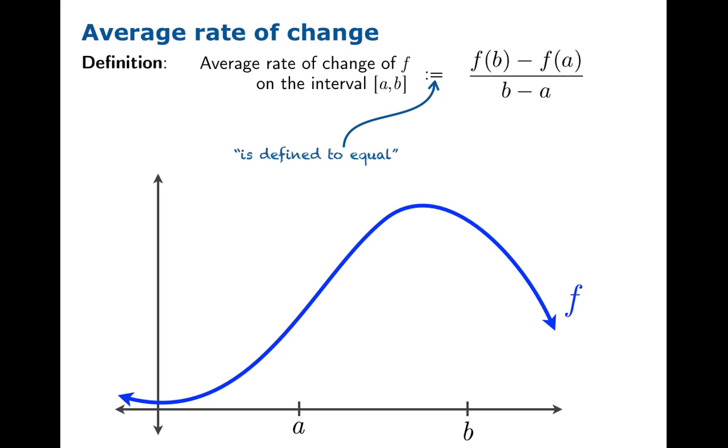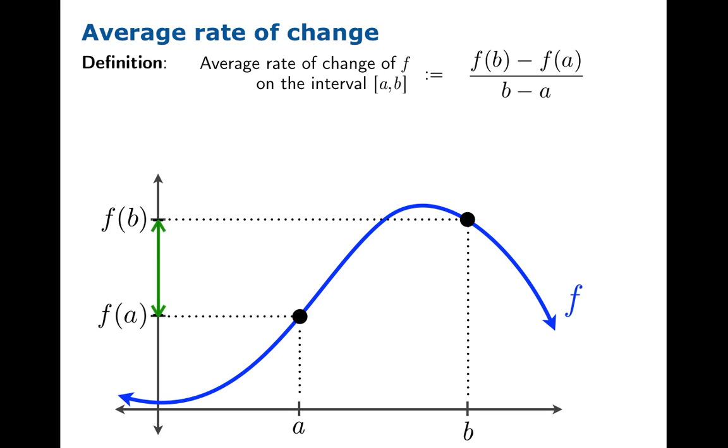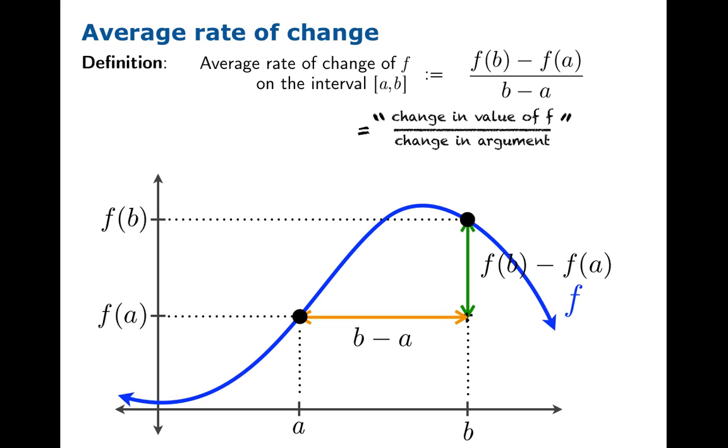Now what is it we're calculating? By the way, the colon equals is a symbol that means is defined to equal. We are actually defining the left-hand quantity to be what you get in the right-hand formula. We're measuring a change in value over a change in argument. f of b minus f of a is this vertical displacement, and b minus a is measuring this horizontal displacement. Graphically, we're measuring rise over run, the slope of a segment joining those two points.